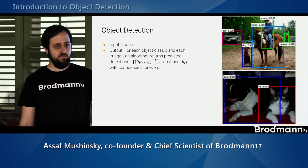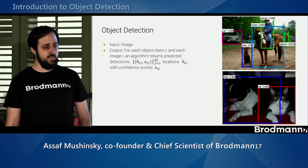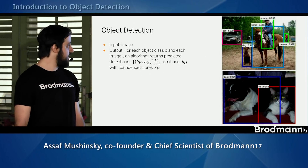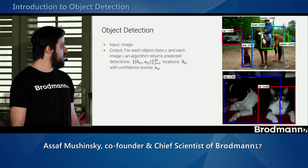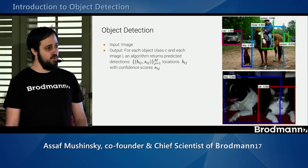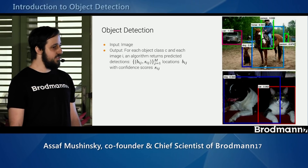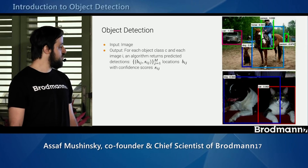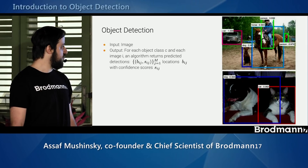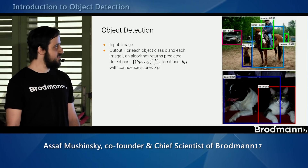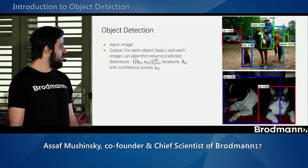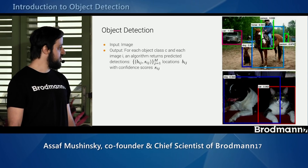Let's redefine object detection in a more formal way. For a given image, we need to output a list of bounding boxes for each of the C classes we're looking for. Each list contains the location of those boxes and the confidence level — the score.